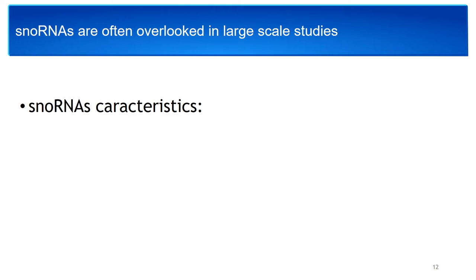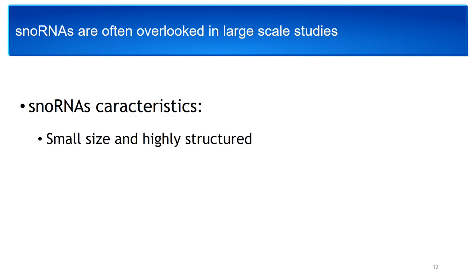This is mainly because snoRNAs are often overlooked in large-scale studies. snoRNAs have certain characteristics that make them difficult to study. One is that snoRNAs are small and highly structured — a very stable structure makes reverse transcription very inefficient with conventional reverse transcriptases, which makes most RNA-seq datasets from the literature unusable for snoRNA studies. Not to mention the fact that many RNA-seq datasets are done with poly-A purification, which eliminates snoRNAs. Another characteristic is that snoRNAs are embedded in other genes, making it difficult when you want to study a particular snoRNA. For example, when you want to knock down a snoRNA, it's always difficult to target only the snoRNA sequence and not the pre-RNA of its host, which also contains the snoRNA sequence.